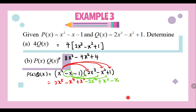The last term is -1. We make sure -1 multiplies with every term of Q(x). So, -1 times 2x³ gives -2x³, -1 times -x² gives +x², and -1 times 1 gives -1.